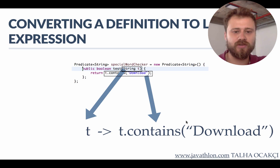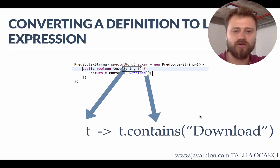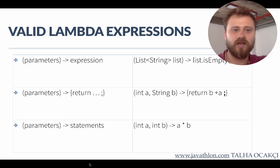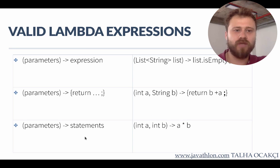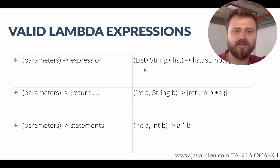This five-line code has been reduced to only one single line. In functional programming it's so important to write one-liner codes — these are called one-liners. Let me show you some valid lambda expressions. In the previous example we did not define the type of the parameter because JVM automatically understands the type, but if you need to define the type explicitly you may do so.